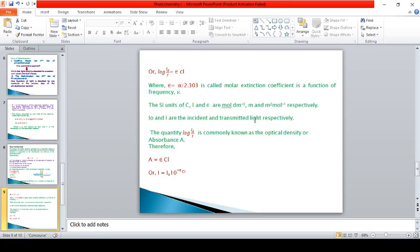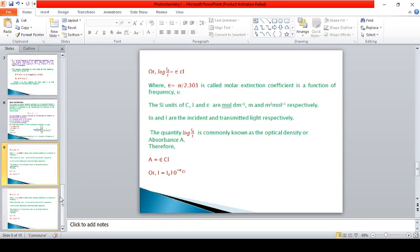I0 and I are the incident and transmitted light respectively. This quantity log I0 by I is commonly known as optical density and absorbance A. Therefore, A equals epsilon CL or I equals I0 times 10 to the power minus epsilon CL.